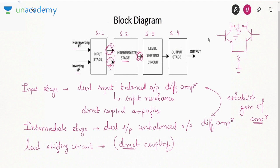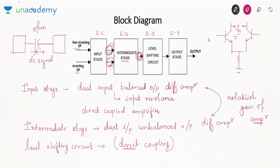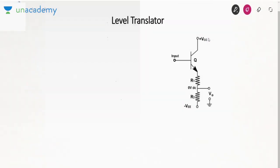But since we use direct coupling, DC as well as AC passes from one stage to the other. This leads to shifting of the Q point. The DC output of the first stage acts as the input of the second stage. If the input of the second stage is changing, its Q point will also change.